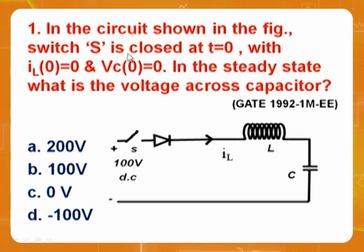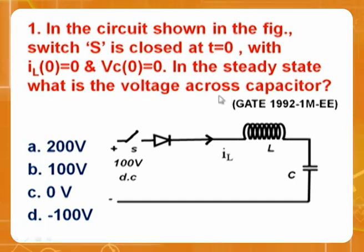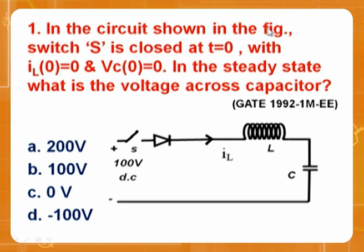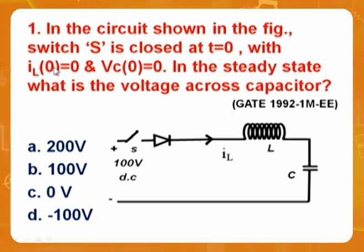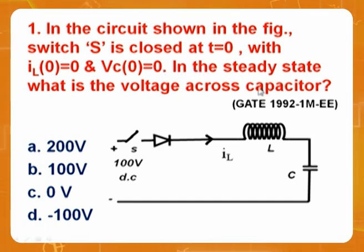Let's go to the first illustration. Problems are taken from GATE because it's good to solve existing exam questions. First problem: in the circuit shown, switch S is closed at t equal to zero, with I_L(0) = 0 and V_C(0) = 0. In the steady state, what is the voltage across the capacitor?